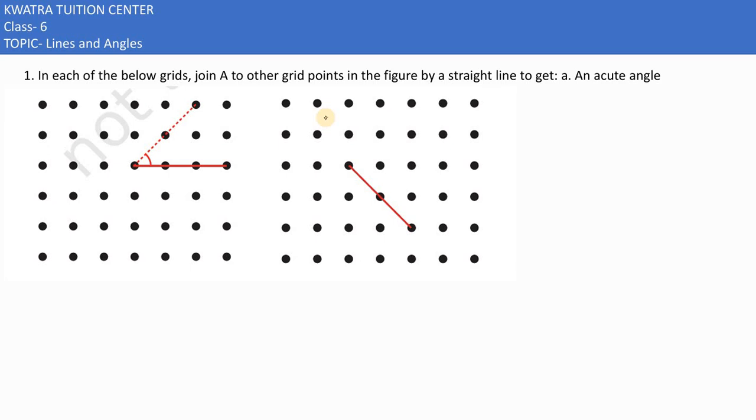In each of the below grids, join A to the other grid points in the figure by a straight line to get an acute angle.